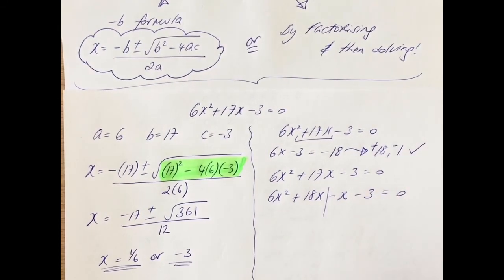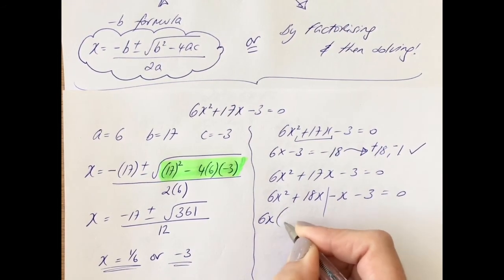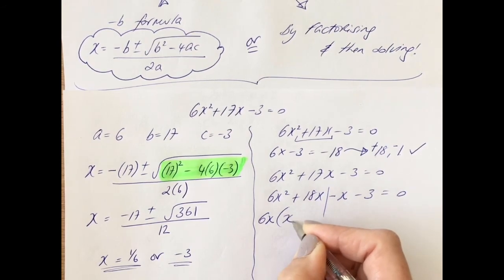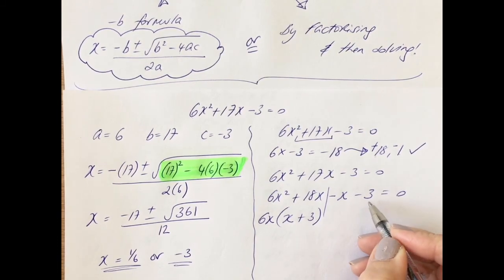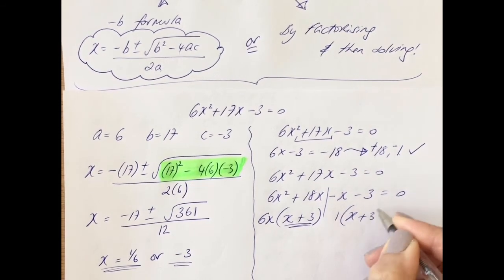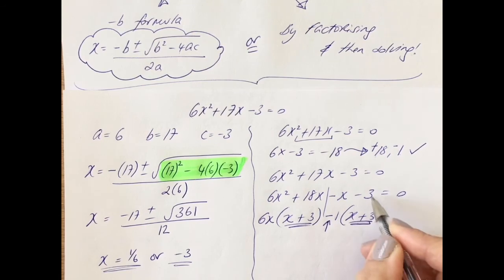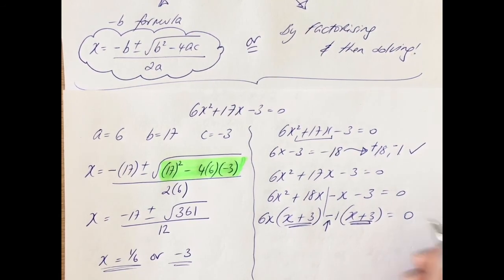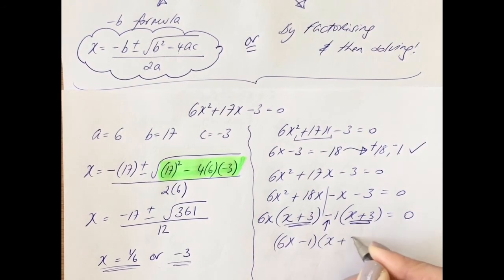So now we will rewrite the quadratic, and instead of 17x we are going to rewrite it as plus 18x minus 1x minus 3 equals 0. Now we're going to split and factorize. Common to 6x squared and 18x, we can pull out 6x. What would you multiply 6x by to get 6x squared back? You need an x and a 3. Common to minus x and minus 3 — nothing really, so we'll put out 1. Remember these should be the same, so x plus 3, and then we'll do this sign last. It would have to be a minus so that we get a minus x and a minus 3 when multiplying out the brackets.